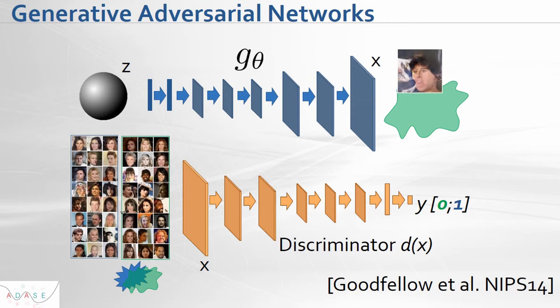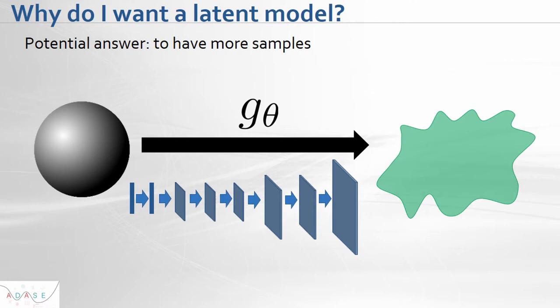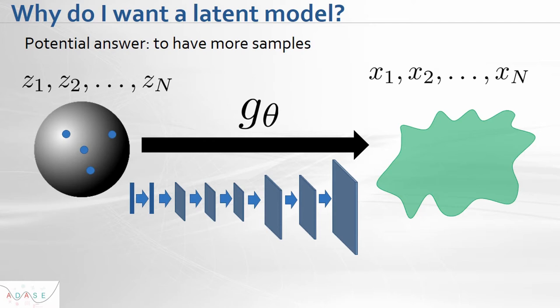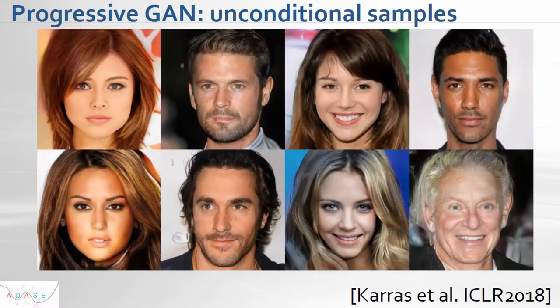In the case of generative models, we just have one mapping which maps a latent vector to an image. If we sample in latent space, then we can generate images x1, x2, ..., x sub n. Nowadays, these generative models allow modeling images quite accurately — for example, here is a well-known model called Progressive GANs.